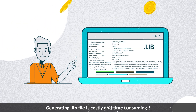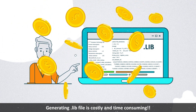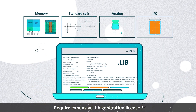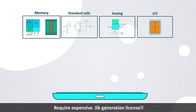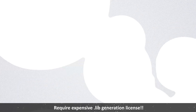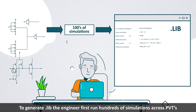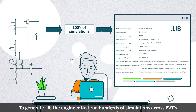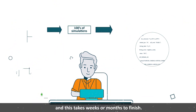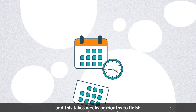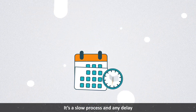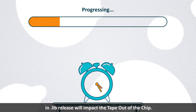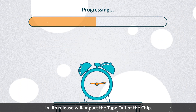Generating a .lib file is costly and time-consuming. It requires an expensive .lib generation license. To generate .lib, the engineer first runs hundreds of simulations across PVTs, and this takes weeks or months to finish.